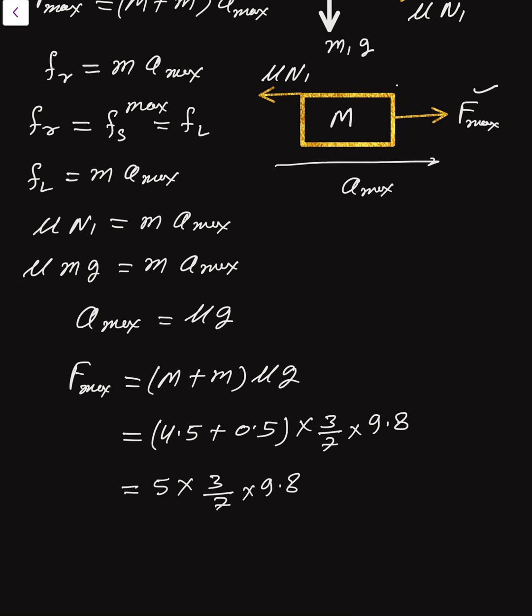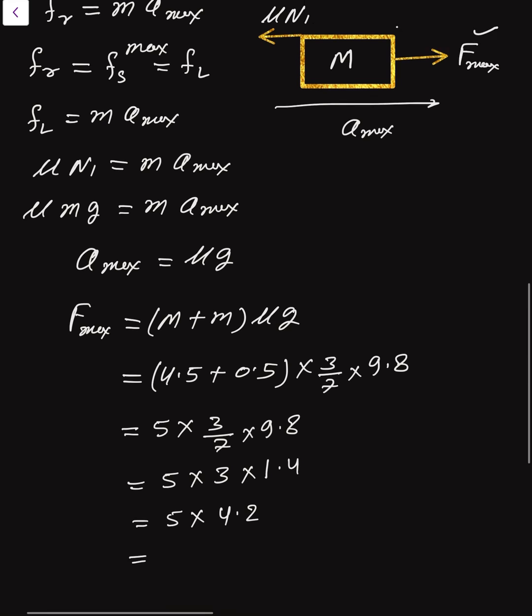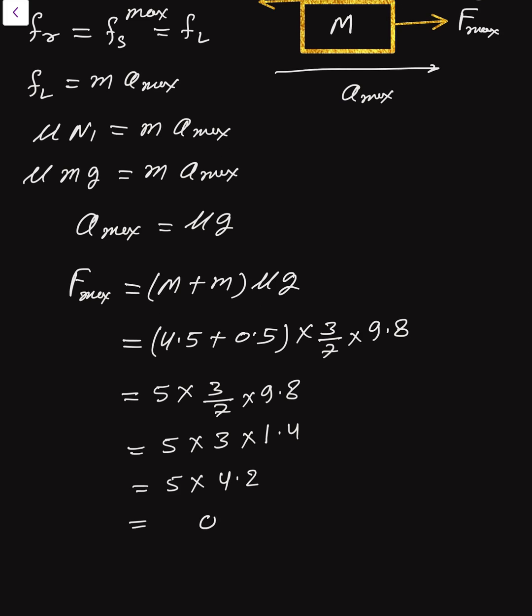So we get 5 times 3/7 times 9.8, which gives 5 times 4.2, and that equals 21 newton.